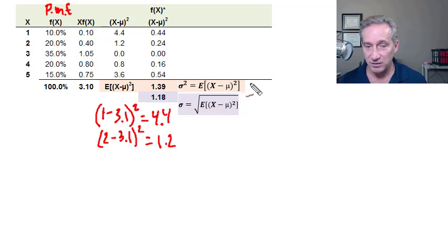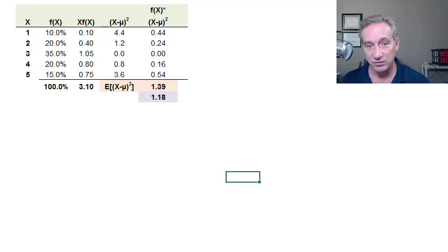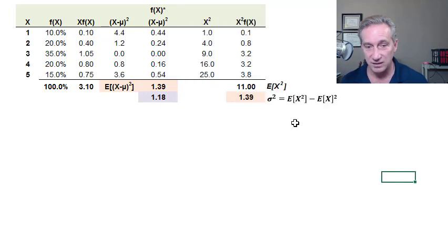So this formula for the variance mathematically translates into what I think is its more useful counterpart that I've shown here. And that is the variance is the expected value of x squared minus the expected value of x squared. So in practice, I'll tell you for exams, this is the one we tend to use. And mathematically, it needs to be the same.